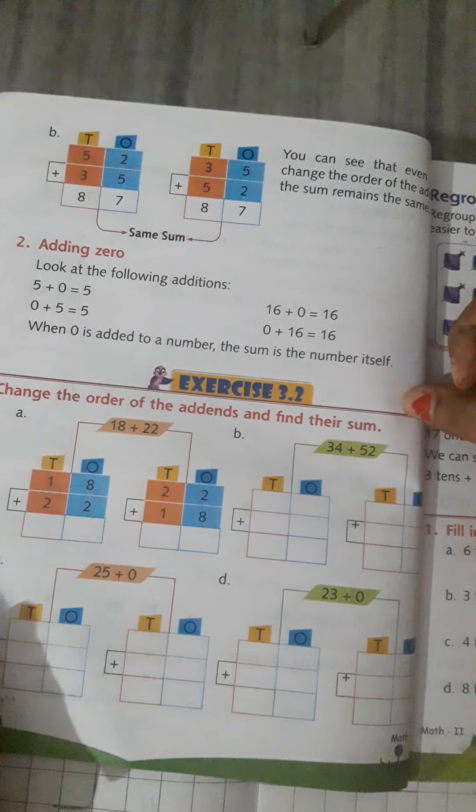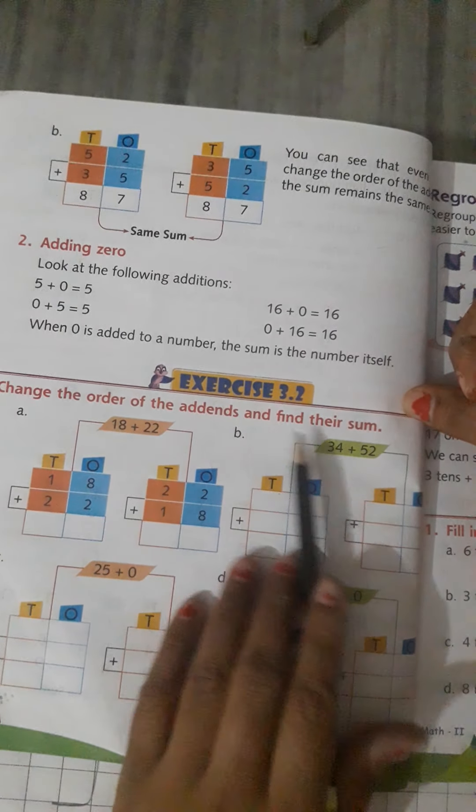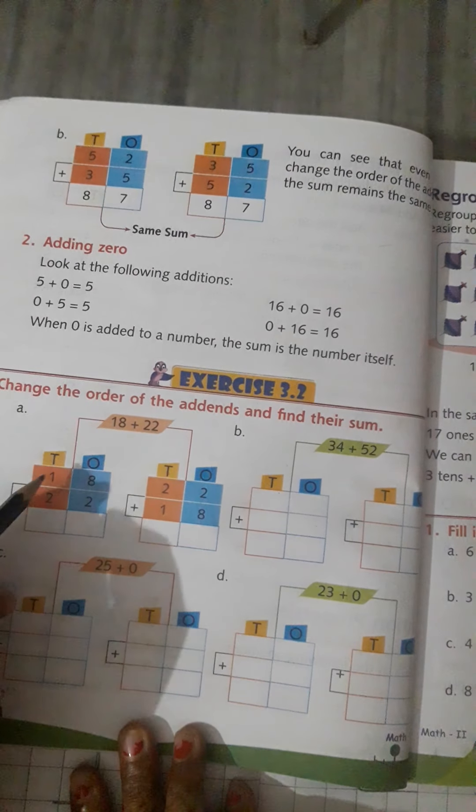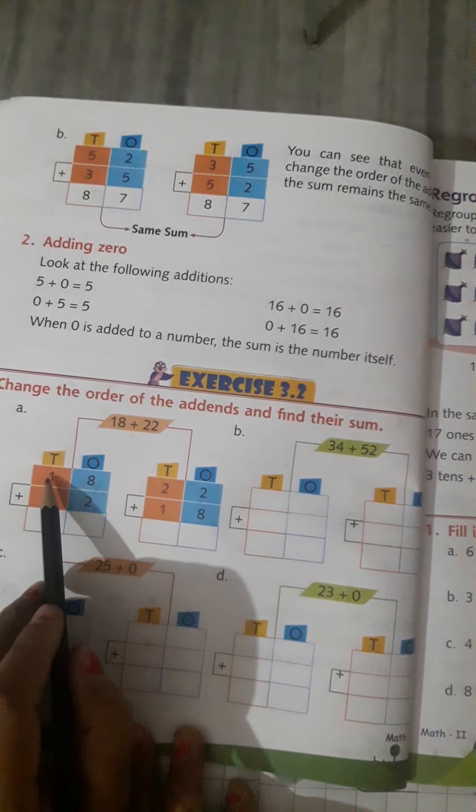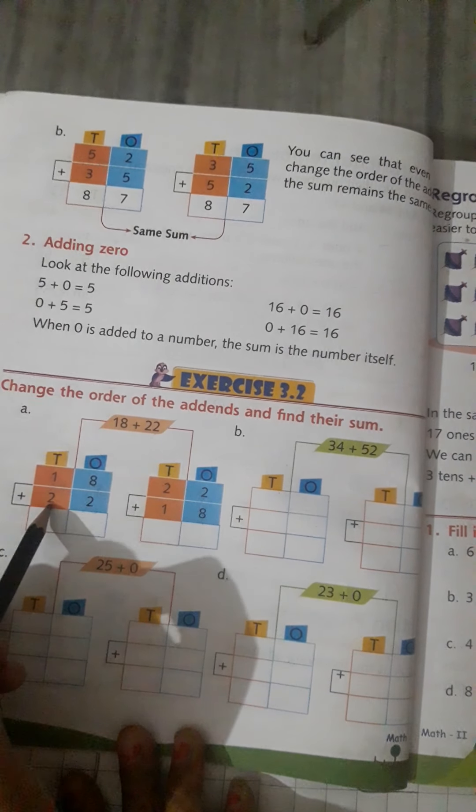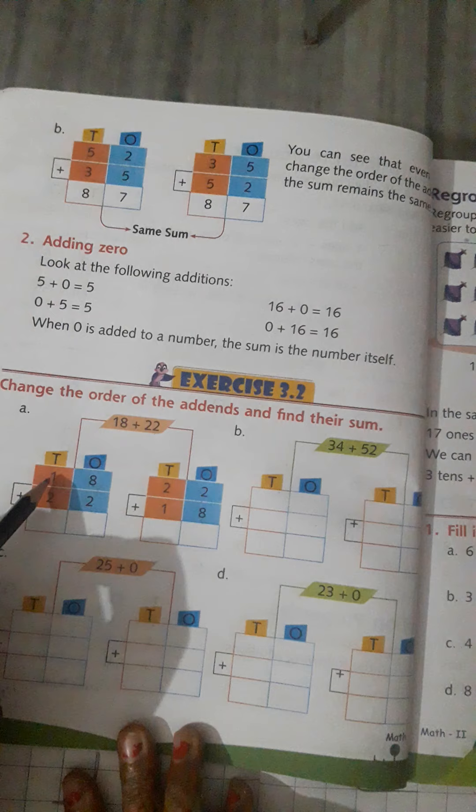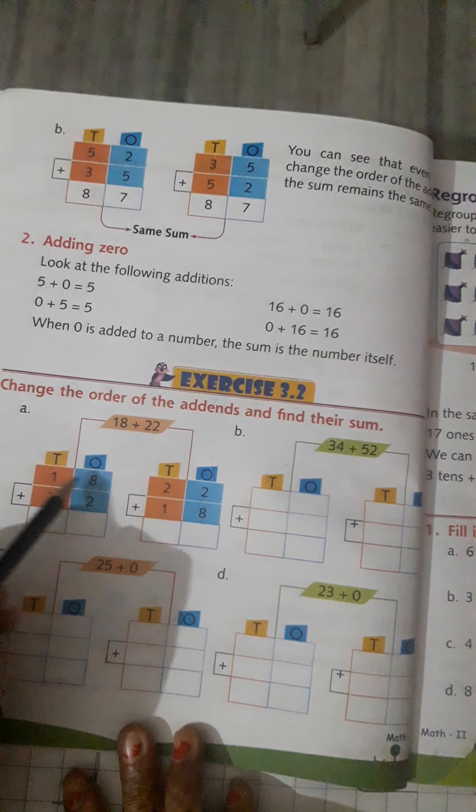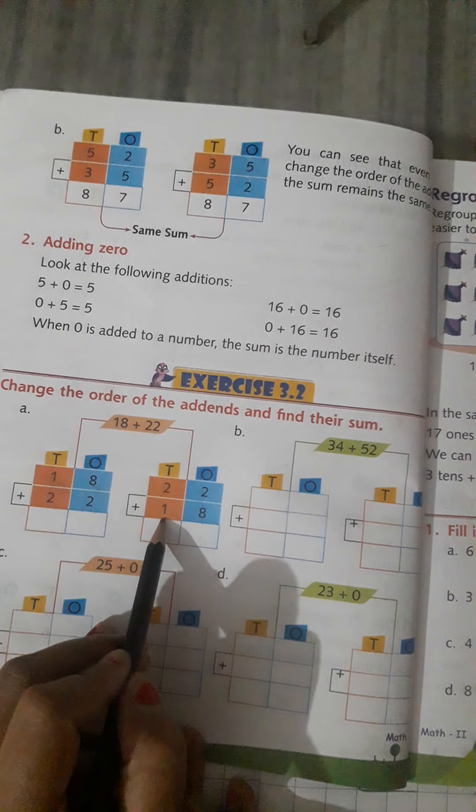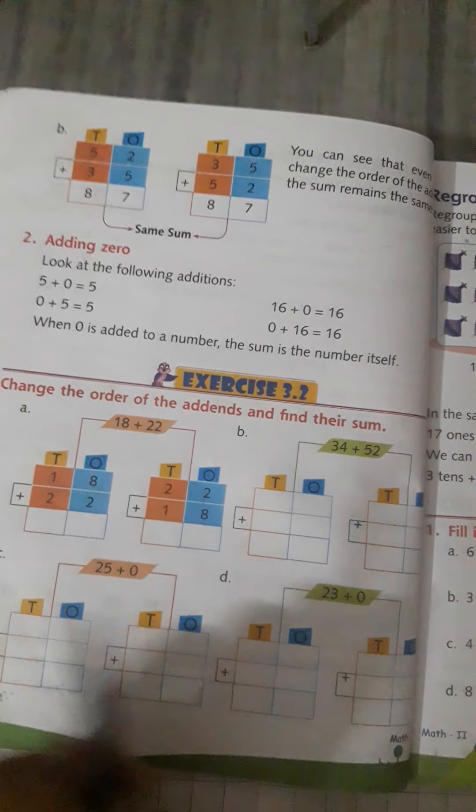Question is: change the order of the addends and find their sum. Now, we need to add to this. First of all, here is 1818 and below is 2222, and here is 1818. These two numbers are also in the same way. How? 1818 and 2222, and here is 2222 and here is 1818.